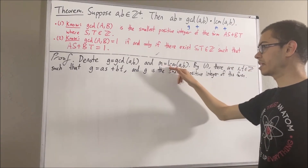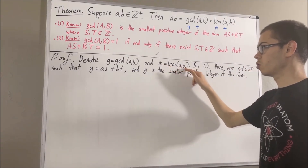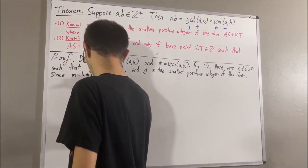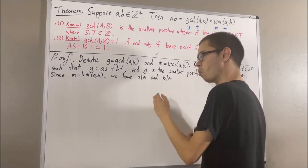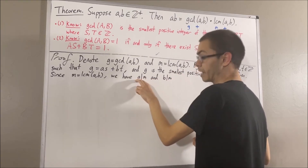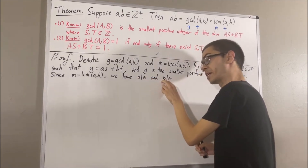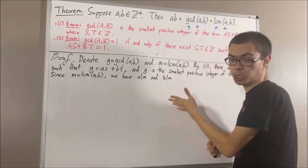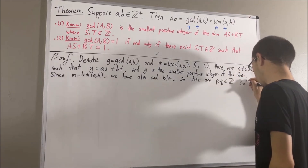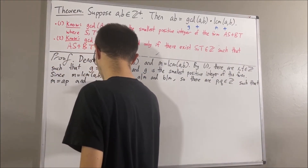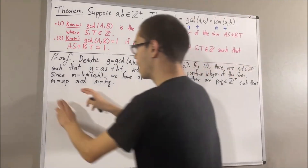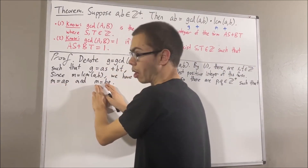Since M is the least common multiple of A and B, we know that A is a divisor of M and B is a divisor of M. For A to be a divisor of M, there is some integer P such that M is equal to A times P. For B to be a divisor of M, there is some integer Q such that M is equal to B times Q. P and Q must be positive integers because M and A are positive, and M and B are positive.